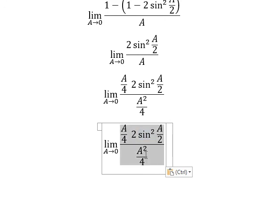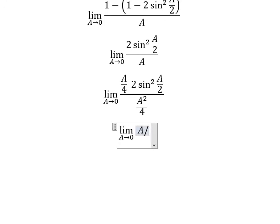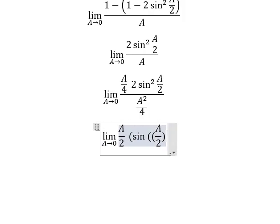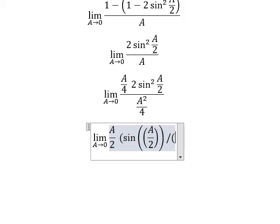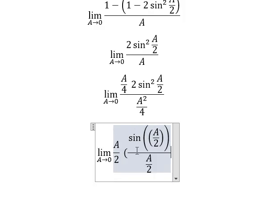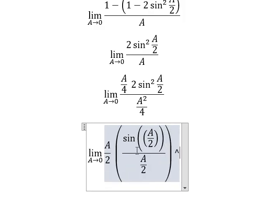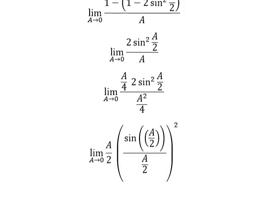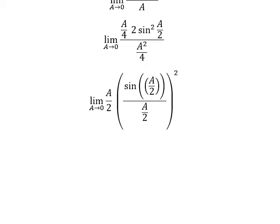Number 2 divided by 4 gives us 8 over 2. We have sin of A over 2, over A over 2, everything to the power of 2. Now we have the formula here.